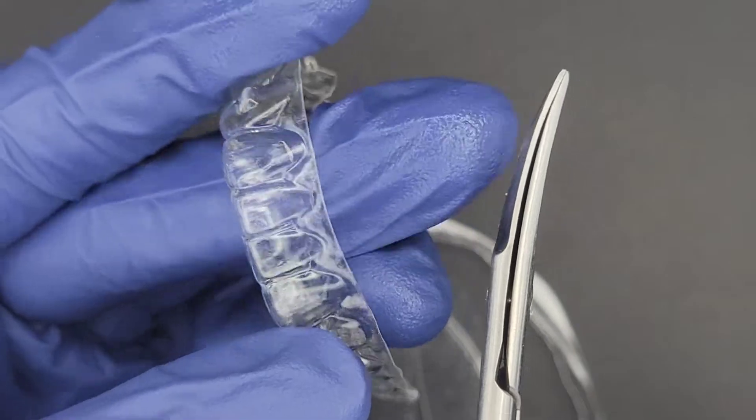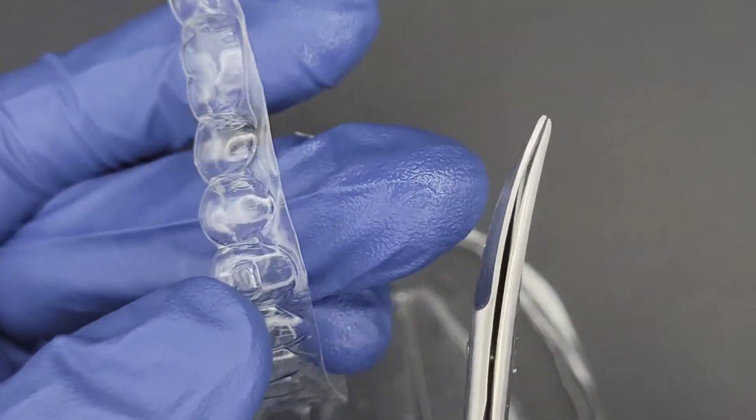Once you've made your initial trim, you can go back and clean up any sharp edges. It should look like this.